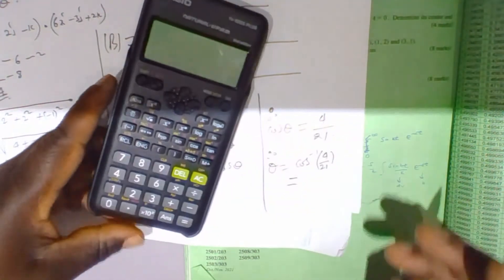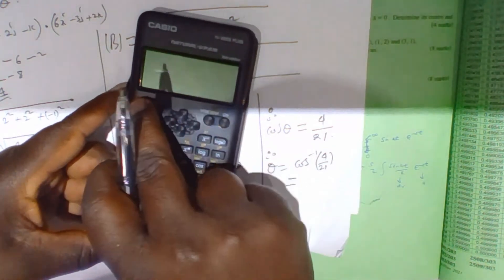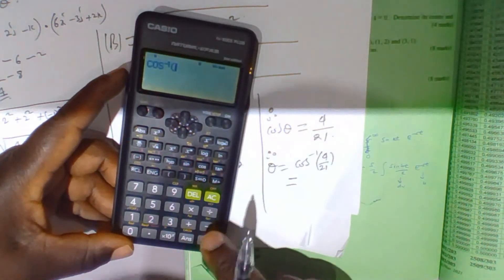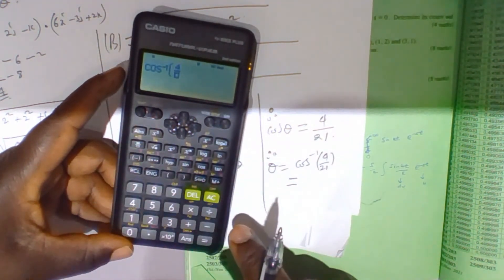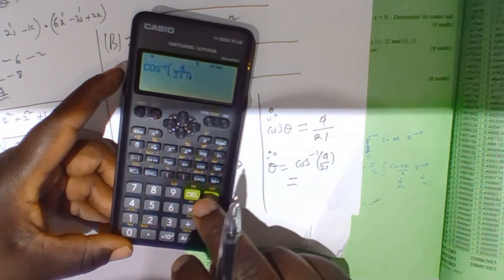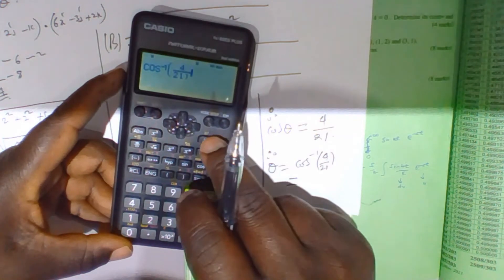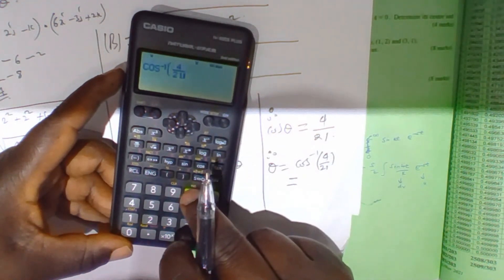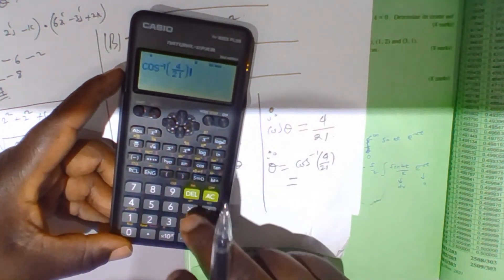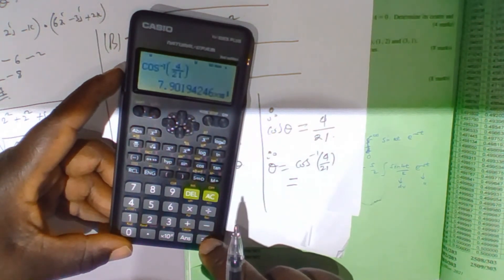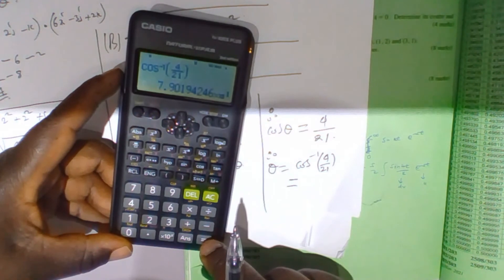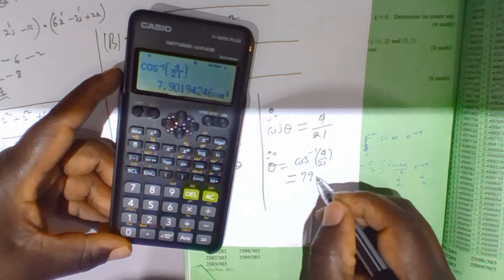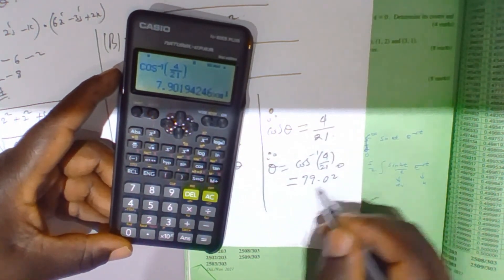Using our calculator to evaluate cos inverse of 4 divided by 21, which equals approximately 79 degrees.